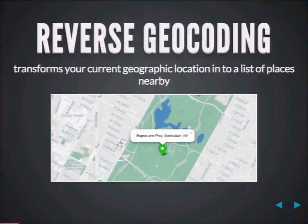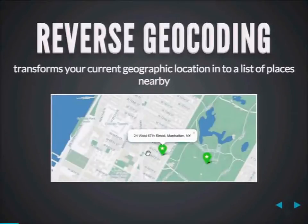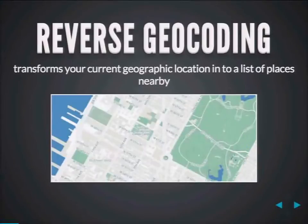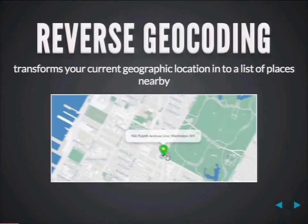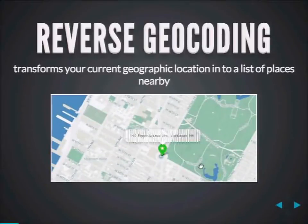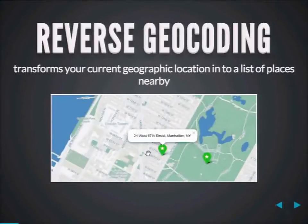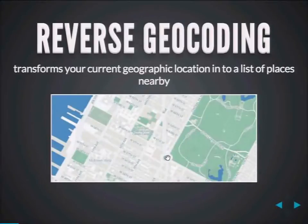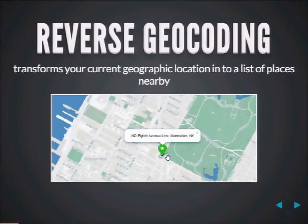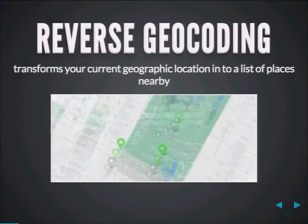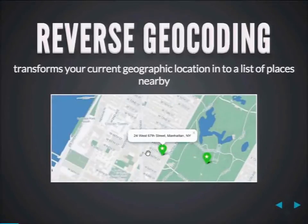Reverse geocoding is the exact opposite — it translates a lat/long into a textual address. So when you geotag your photo, your tweet, or check into a restaurant, you're basically doing reverse geocoding. When your device sends a lat/long to a server and gets back what neighborhood you're in, that is also a kind of reverse geocoding.